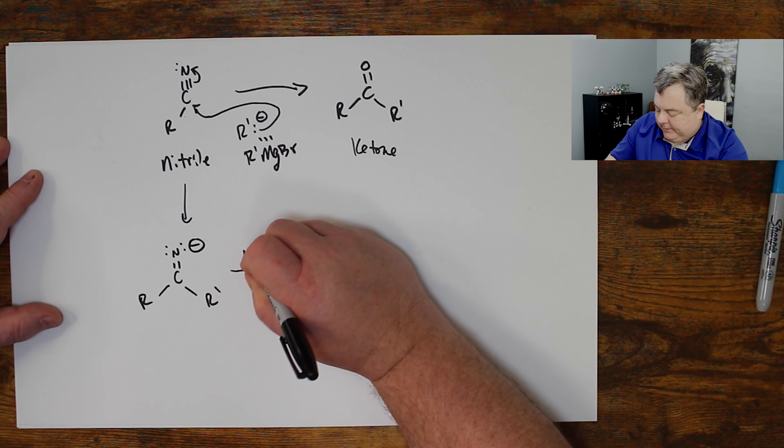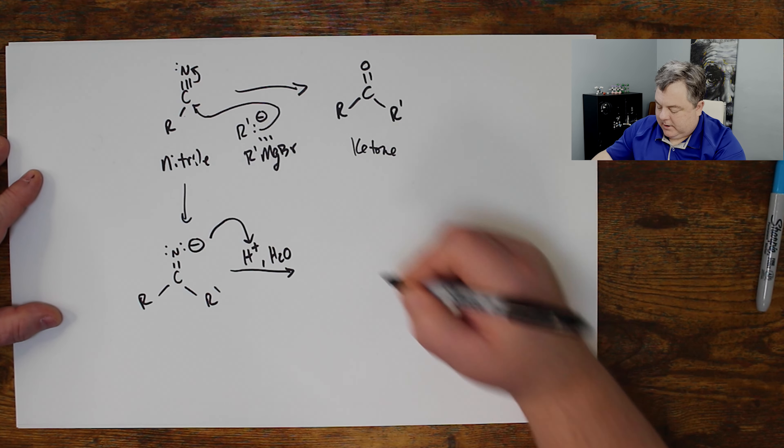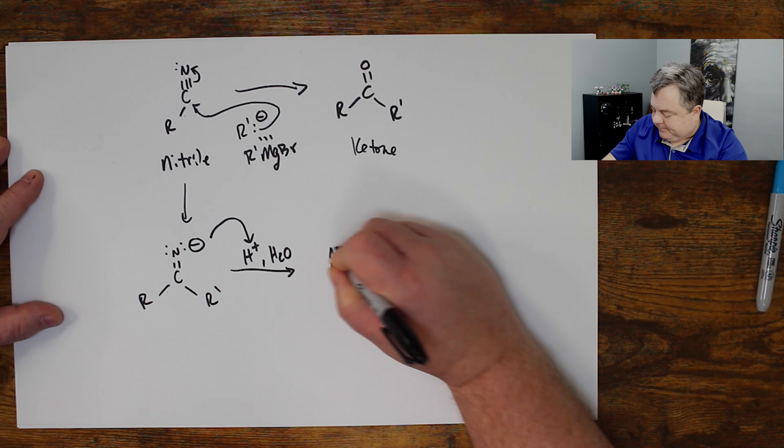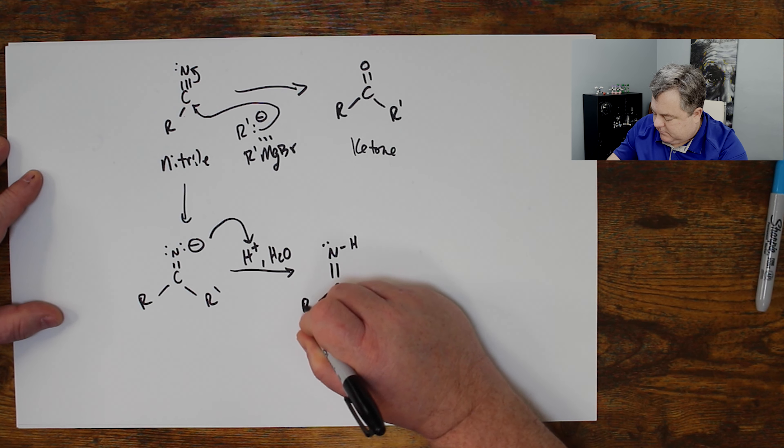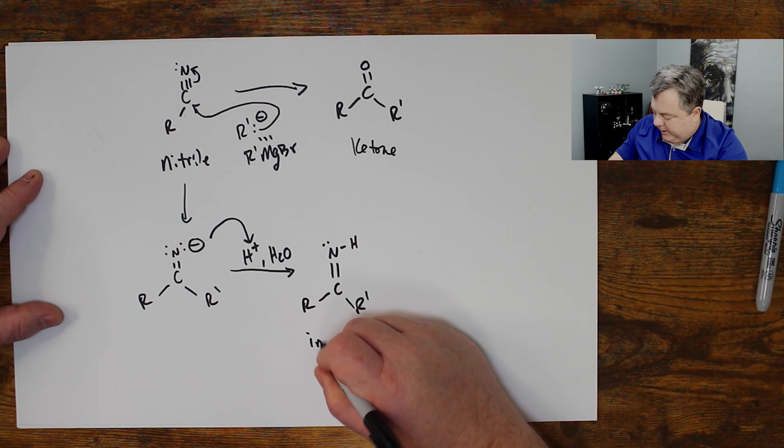It stays that way until I add some acid and water. I quench that will grab that hydrogen to make this compound. These carbon double bond nitrogen compounds are called imines.